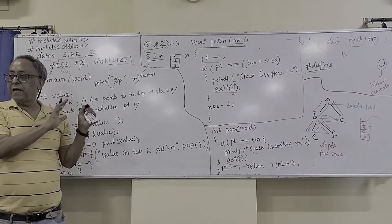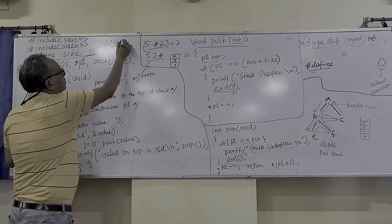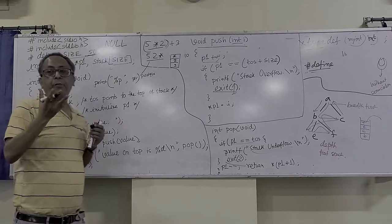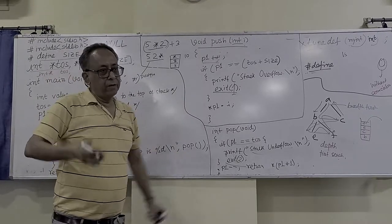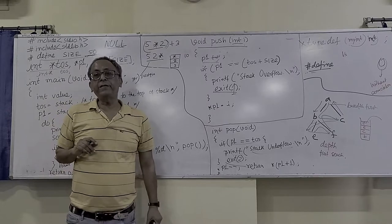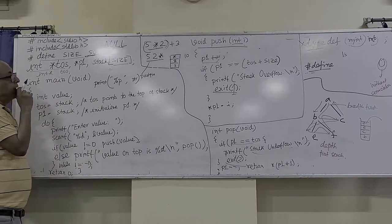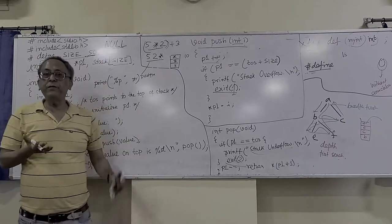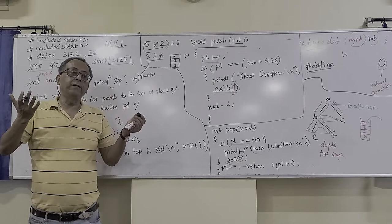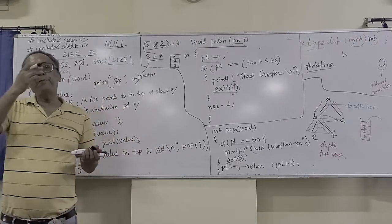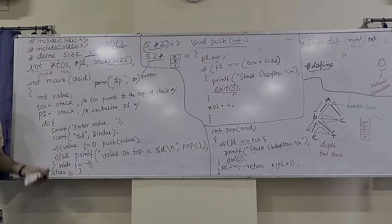Another is the null pointer. Null is defined in standard I/O — it is nothing but 0. But better use NULL so your program is more readable. Don't use 0 directly, because 0 can mean many things. Any pointer you are not using should be set to NULL. Another is dangling pointer — the pointer has no valid use; it points to something that no longer exists and can cause corruption. Another is garbage pointer — all these are pointer-related concepts.